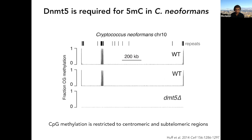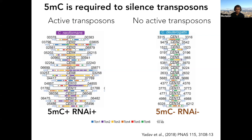The function of 5-methyl-C is almost certainly transposon silencing. There are six families of transposable elements at centromeres (TCN1 through 6) — all retrotransposons of the gypsy or copia families. The centromeres are basically just transposable element sequences, either active transposons or more commonly transposon remnants. Cryptococcus has both 5-methylcytosine and RNAi acting in parallel to silence these elements.